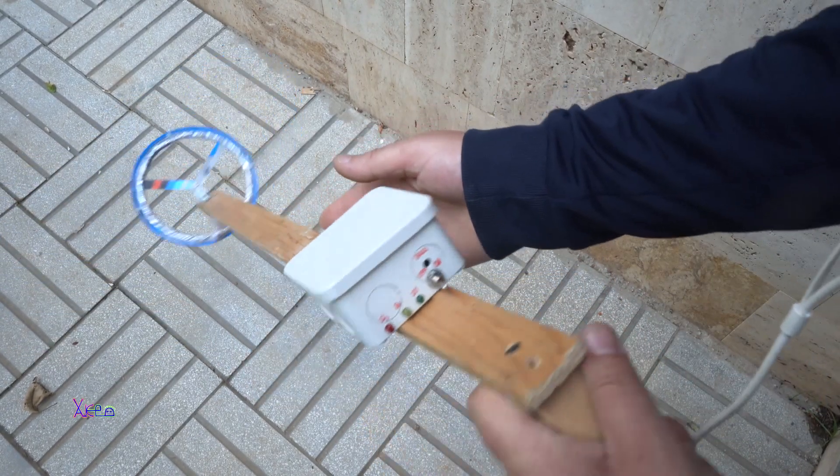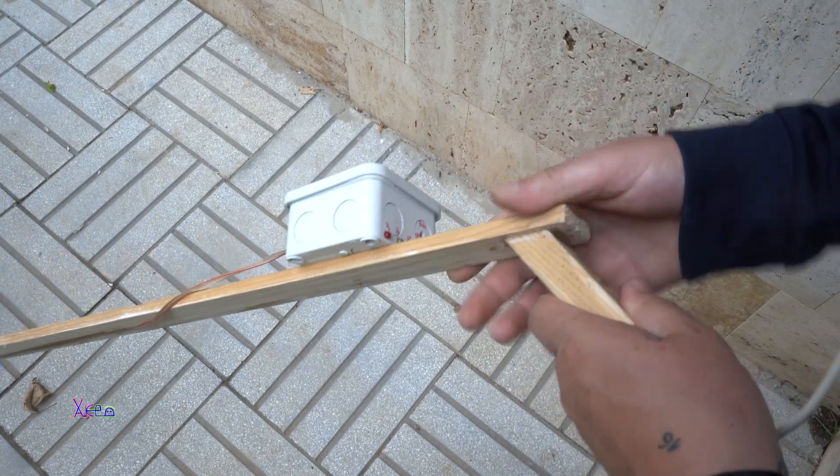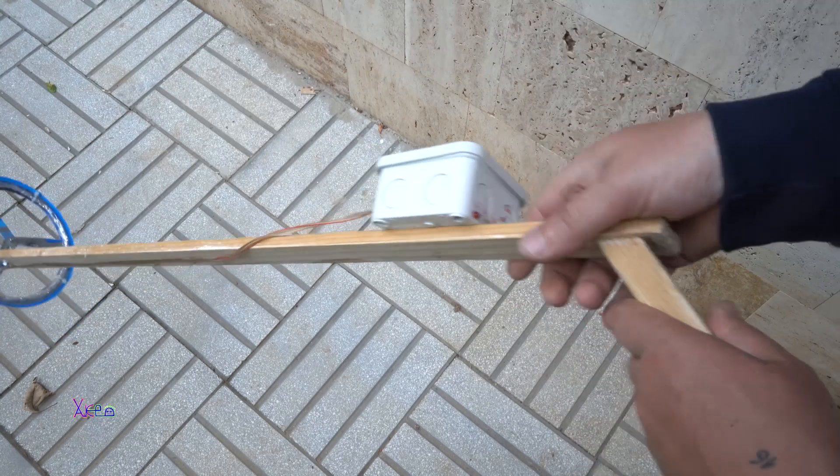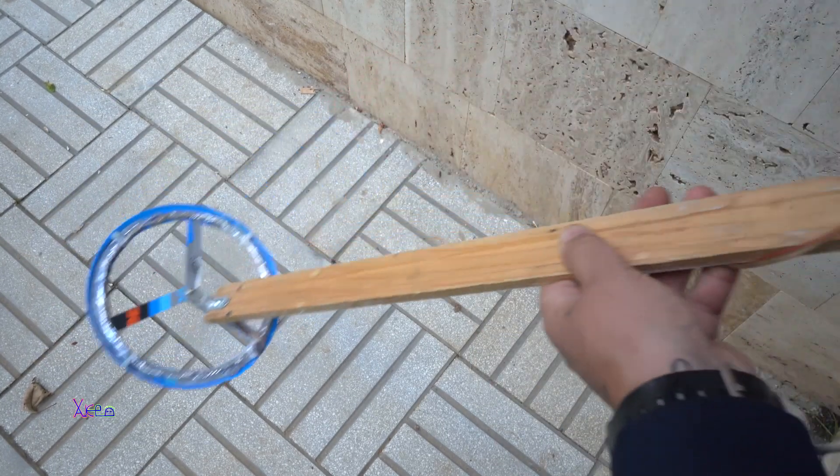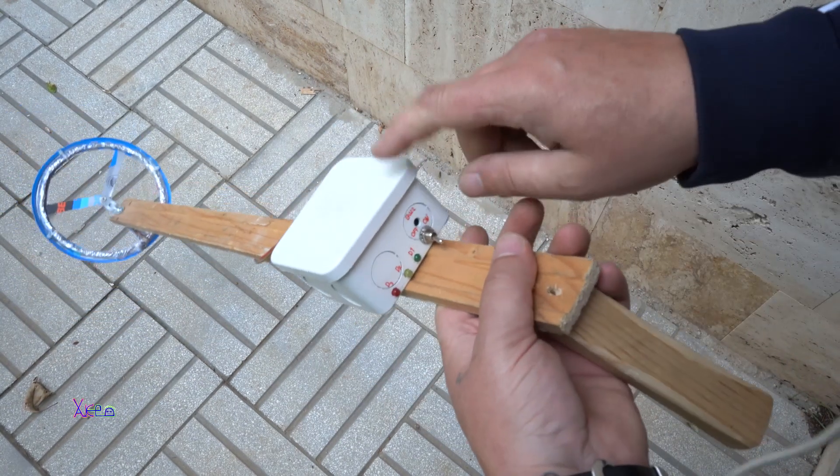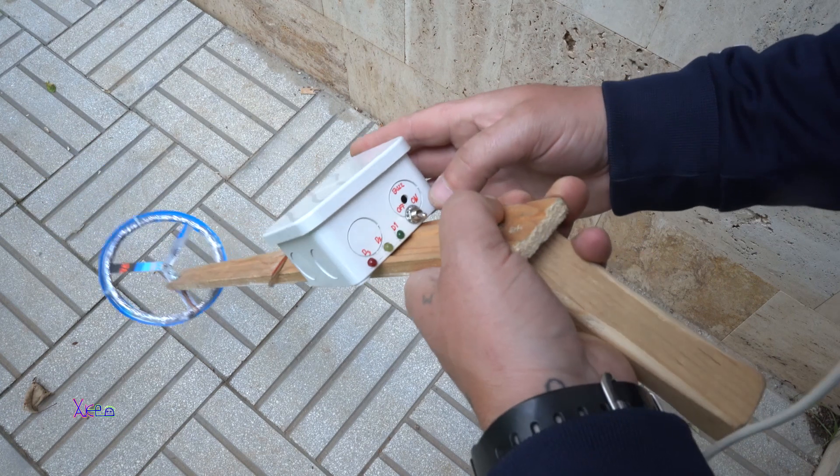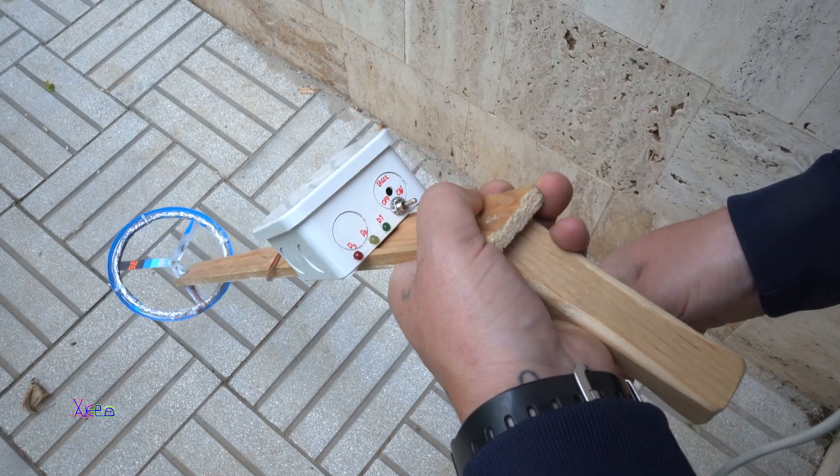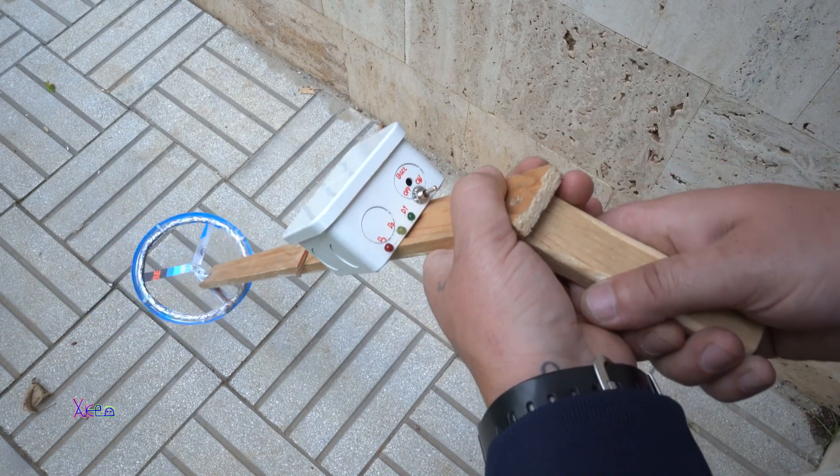So here it is, the finished Arduino metal detector with wooden handle. At the bottom we have a searching coil, homemade. This is the box with the whole electronics. I'm gonna turn it on. And it's ready. Let's search.